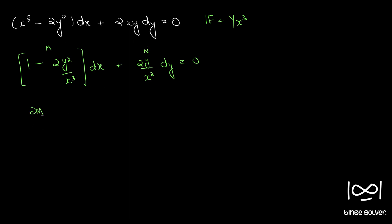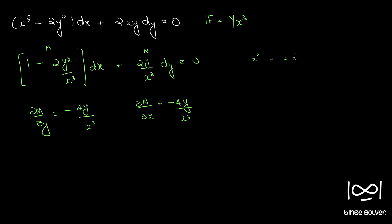We will take ∂M/∂y, which is minus 4y by x³. And ∂N/∂x: since N is 2y times x raised to minus 2, differentiating x raised to minus 2 gives minus 2 times x raised to minus 3. So ∂N/∂x is also minus 4y by x³.